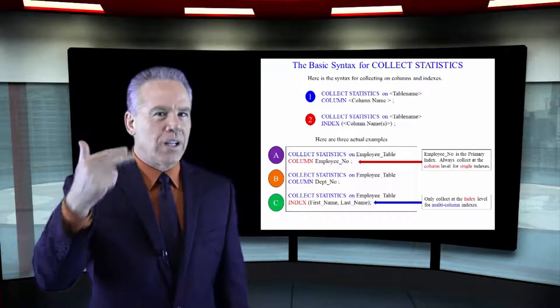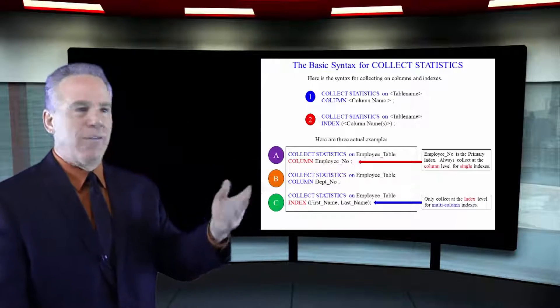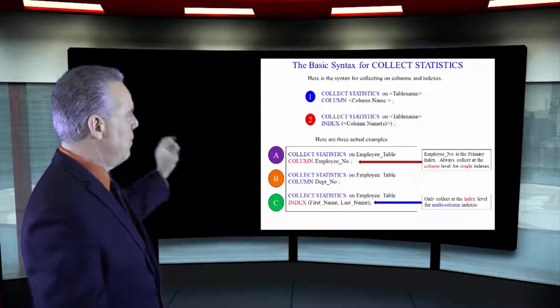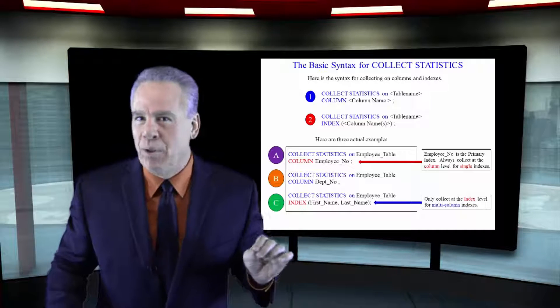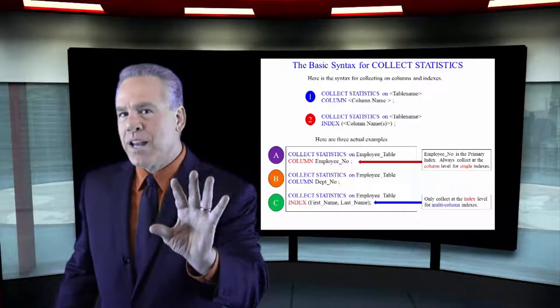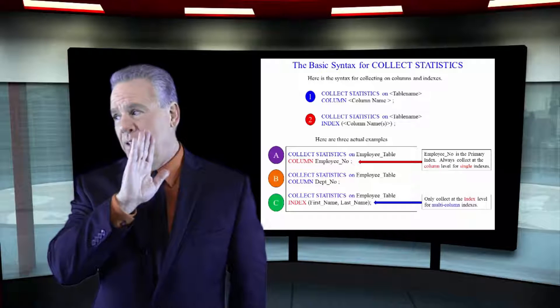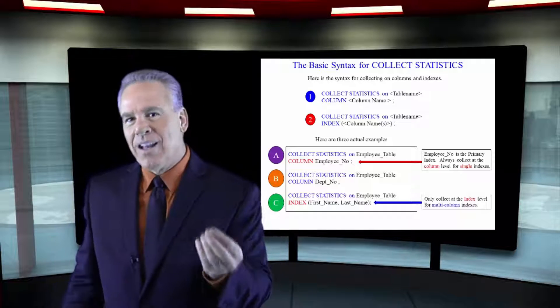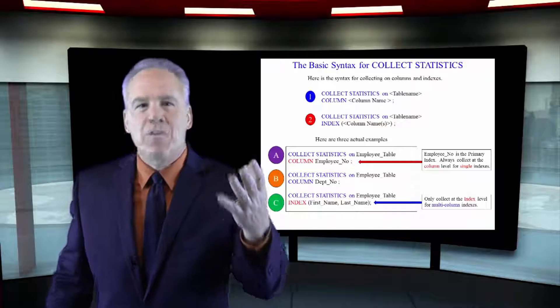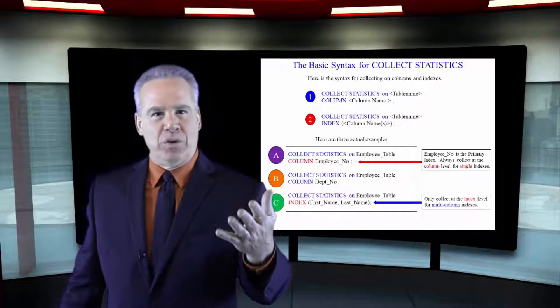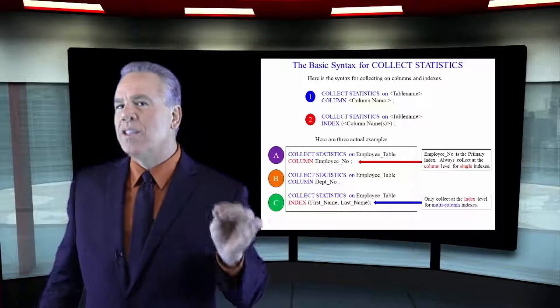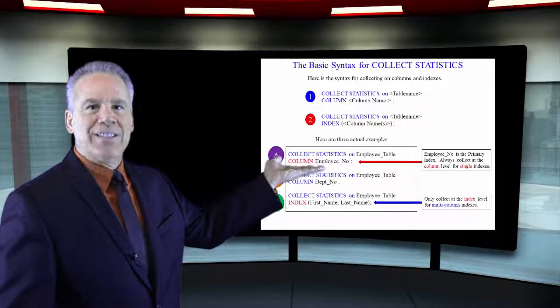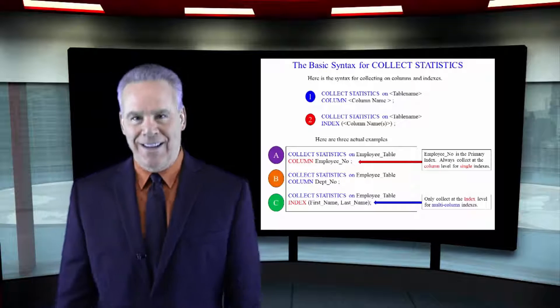If you were to collect statistics at the index level in example number A, collect statistics on employee table, index, open paren, close paren, employee number. Teradata would actually say they really mean the column level, since it's a single column. So, you wouldn't get burned by that, but I'm just giving you some information that might come valuable to you, so you can understand why most of the time you collect statistics, you'll see that column level syntax, even though it's an index.